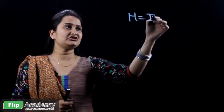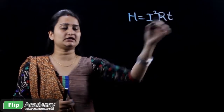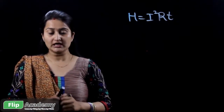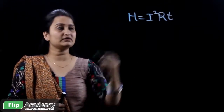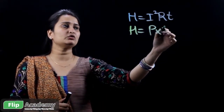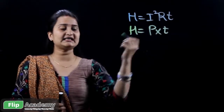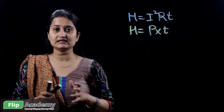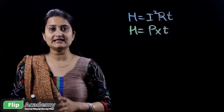During heat calculation, if current, resistance, and time are given, you use the formula H = I²RT. Sometimes in numerical problems, power is given, in which case you use the formula H = P × T, where P stands for power and T stands for time period. These are two formulas indicating the same heat energy.